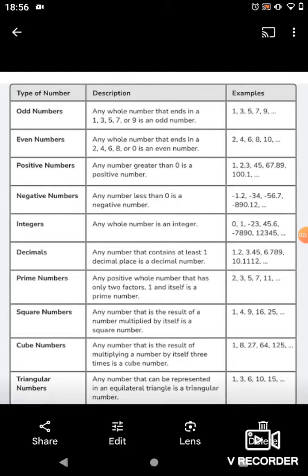Negative numbers. Any number less than 0 is a negative number. Like minus 1.2, minus 3.4, minus 5.6. Have you seen the number line? You will understand better.